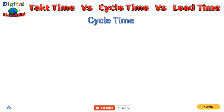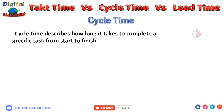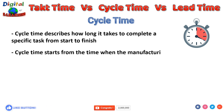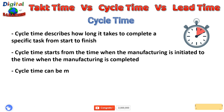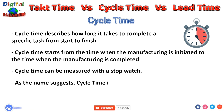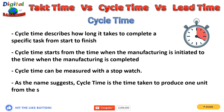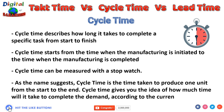Next, we have cycle time. Cycle time describes how long it takes to complete a specific task from start to finish. It starts from the time when manufacturing is initiated to the time when manufacturing is completed, and it can be measured with a stopwatch. Cycle time gives you an idea of how much time it will take to complete the demand at the current rate, and it does not take into consideration any other time beyond the actual production.